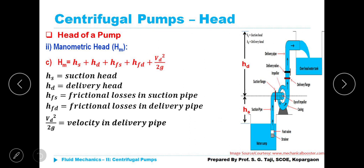Therefore next, HM can also be written in form of HS plus HD plus HFS plus HFD plus VD squared by 2G. HS is nothing but suction head. HD is nothing but delivery head. HFS is the frictional losses in suction pipe. HFD frictional losses in delivery pipe. VD squared by 2G velocity in the delivery pipe. S represents suction suffix. Suffix D represents delivery side. H is nothing but head. F indicates frictional. Very simple to understand.